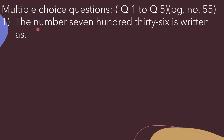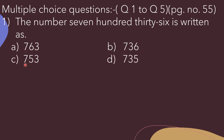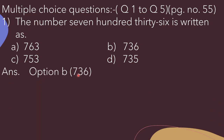Question number 1: The number seven hundred thirty-six is written as. We have to find out the correct option. Our number is 700 and 36. At the hundreds place there should be 7, and at the tens and ones place it should be 3 and 6, making 36. So option B, 736, is the correct answer.